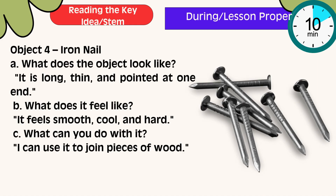Object 4: Iron nail. What does the object look like? It is long, thin, and pointed at one end. What does it feel like? It feels smooth, cool, and hard. What can you do with it? I can use it to join pieces of wood.